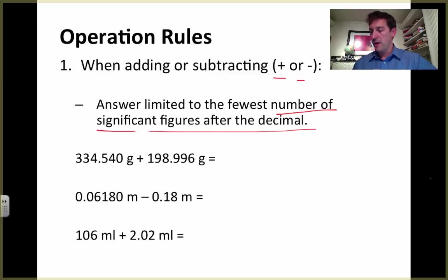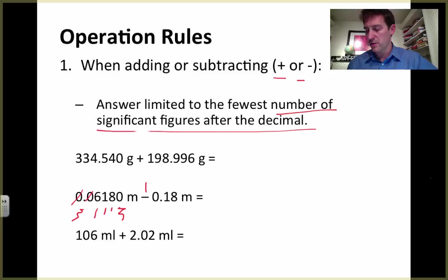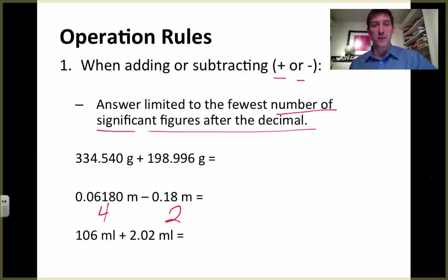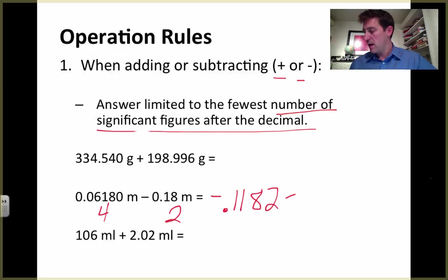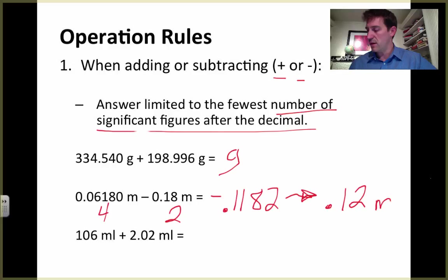The next one — again, we're subtracting, so we count significant figures after the decimal. We've got one, two, three, and here's a trailing digit with a decimal. But the leading zeros don't count as significant figures — they never do. That gives us one, two, three, four significant figures after the decimal on this number. And this one, we've got one, two — so that's going to be our limiting factor. Our answer can have two significant figures after the decimal. Plugging this into the calculator, we get negative 0.1182, and rounding to the correct number of significant figures, we have negative 0.12 meters.